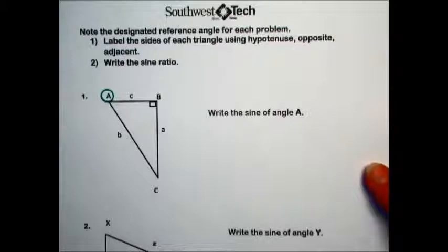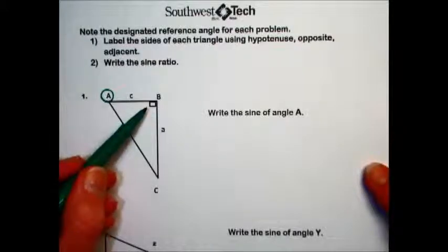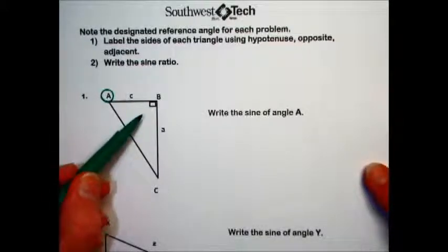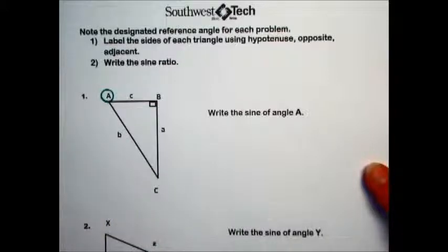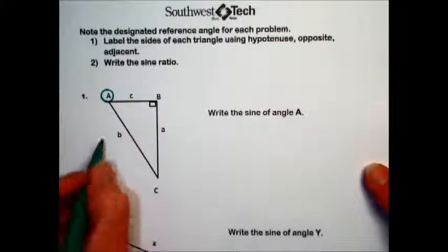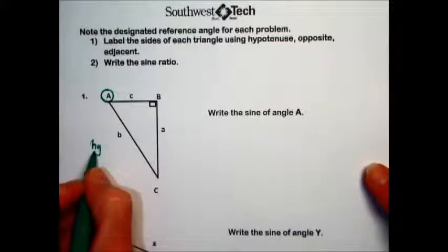We always start with the hypotenuse. The hypotenuse is the longest side in a right triangle and the one that's opposite the right angle. So this length here, B, is our hypotenuse.